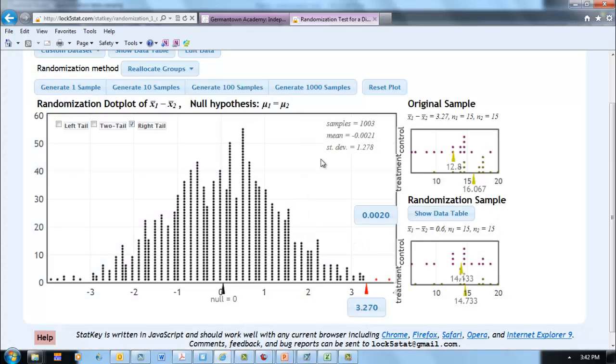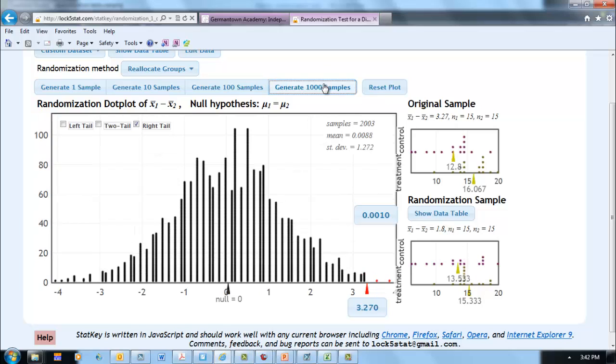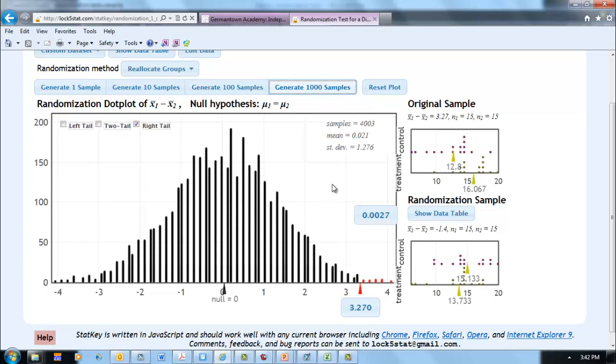And we see that in, let's see, we took 1,003 samples. In 1,003 samples, only 0.002 had a mean difference in scores as or more extreme than we observed, the 3.27. Let's generate another 1,000, and we see that that value in another 1,000 is holding up. So what we're seeing here is that it would be very, very unlikely to observe a difference in mean scores as or more extreme than we observed in the two groups of 3.27, just as a result of chance variation.